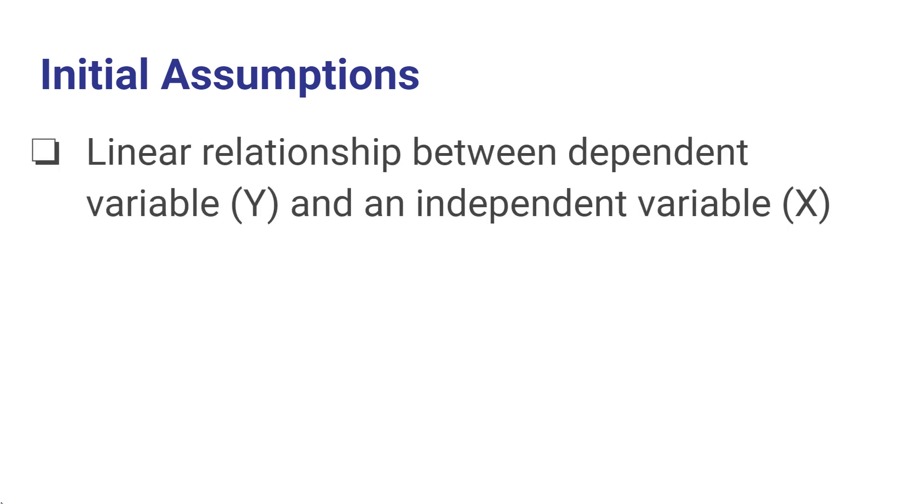Specifically, we're going to assume that there's a linear relationship between the dependent variable, the y variable, the thing we're trying to explain, and an independent variable, which we'll label x initially, which we're assuming is affecting the level of the dependent variable. We're going to assume that x is causing y, but y is not causing x.